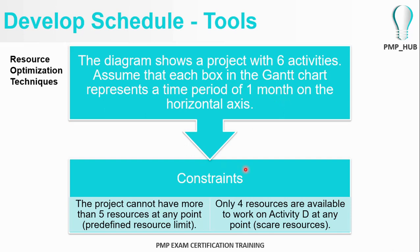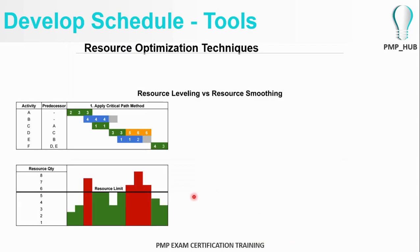The constraints for the project are: the project cannot have more than five resources at any given point, and only four resources are available to do activity D. So there are some scarce resources in activity D. Each box represents one man-month.